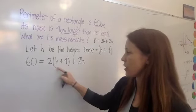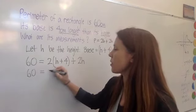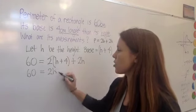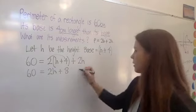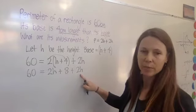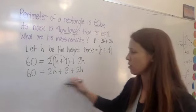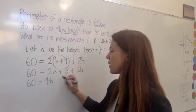To solve this, first thing to do would be to expand out the brackets. So, that gives us two lots of the h, and we need two lots of the four, which is eight, and our extra two h's. Now, tidying up this side, we've got two h plus two h, which is four h. So, 60 equals four h plus eight.